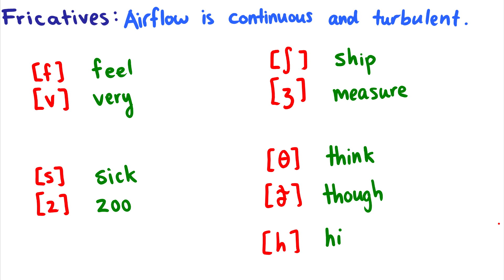Now, fricatives aren't stopped, so airflow is continuous, but it's turbulent. So, for instance, in feel and very, airflow can get out of your mouth continuously, but it's very, very tight. There's a very small space where air can go. So feel and very, these are labiodentals. So this means that your bottom lip and your top tooth are made in the sound production. Feel, very.